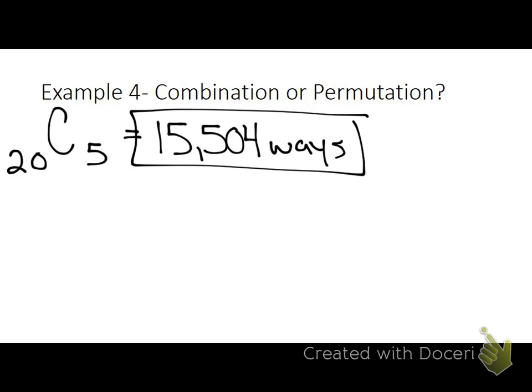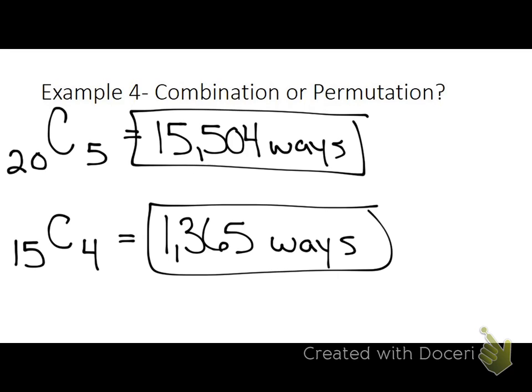Now I want you to look at number four on the bottom of page 652. It's a summer reading program example. You have to decide: is it combination or permutation, and then calculate. It's a combination. How many total did I have to choose from? 20. But how many am I picking? 5. So what's the total? 15,504 ways. And that's it - that's everything you need to know for 13.4.